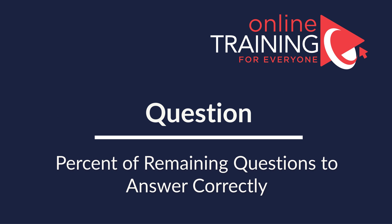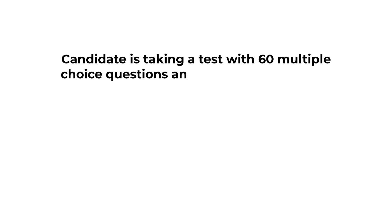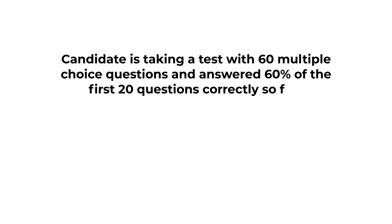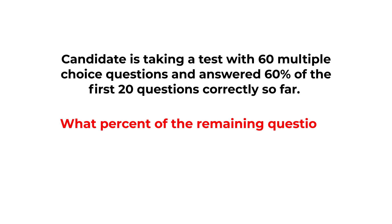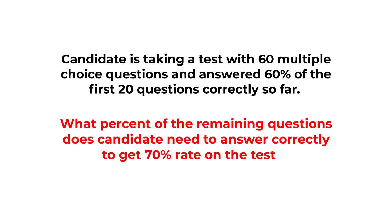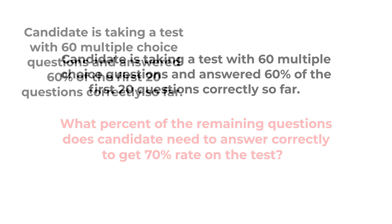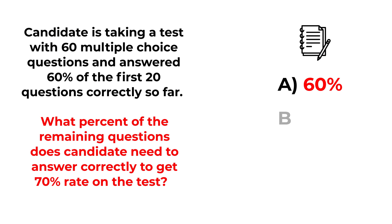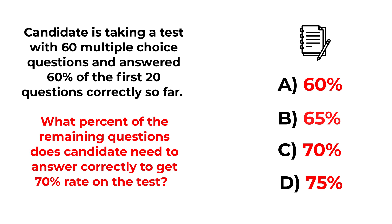Here is one of the frequently used questions to test your understanding of percentages. A candidate is taking a test with 60 multiple choice questions and answered 60% of the first 20 questions correctly. What percent of the remaining questions does the candidate need to answer correctly to get a 70% rate on the test? Choices are: A) 60%, B) 65%, C) 70%, D) 75%. Give yourself 15 to 20 seconds — this question requires multiple steps.